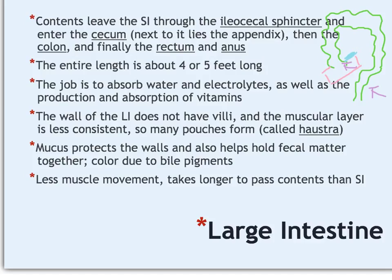The majority of the large intestine is made up of the colon. The colon has several parts: as it goes up it's called the ascending colon; across is the transverse colon; coming back down is the descending colon; and the little bend at the end is called the sigmoid colon. Finally, the last part of the large intestine is called the rectum, which leads into the anus or anal canal.